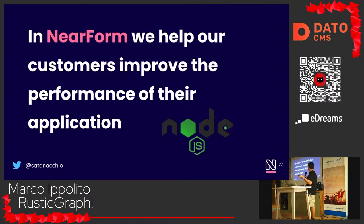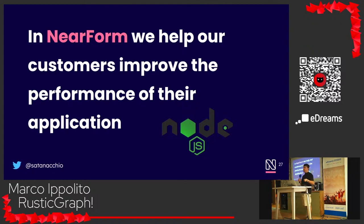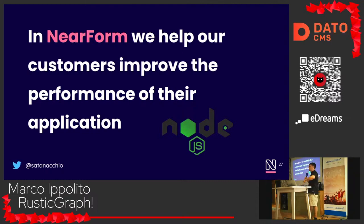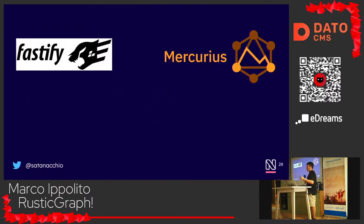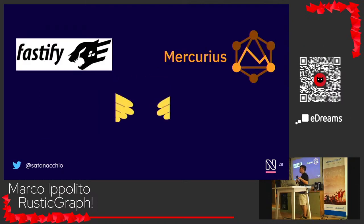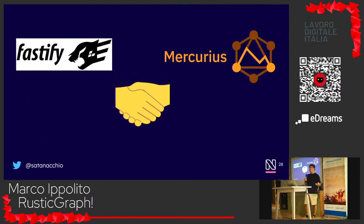At nearForm, we help our customers improve the performance of their applications, so we talk a lot about performance and how to improve even 1% of backend performance. The tools we usually use are Fastify and Mercurius, and the code examples tonight are based on those.